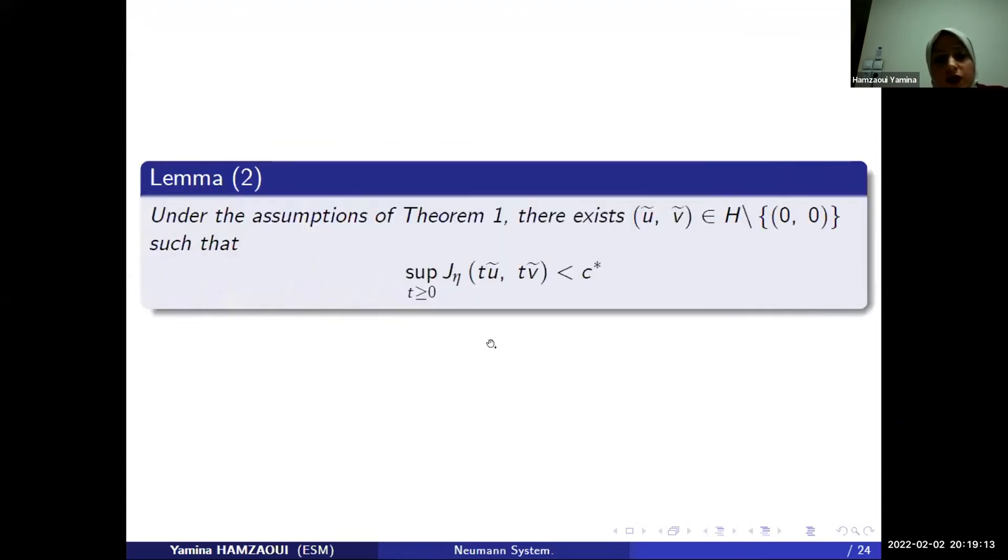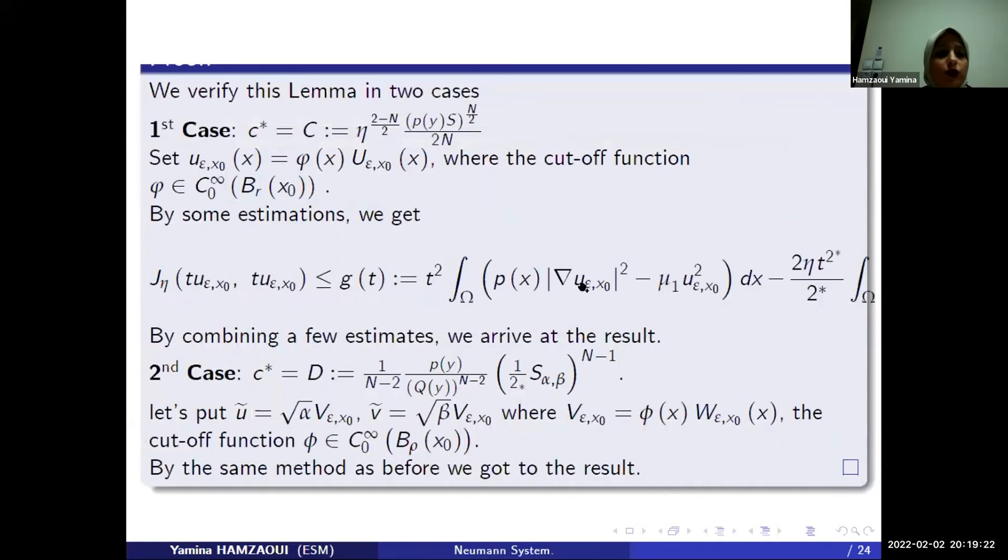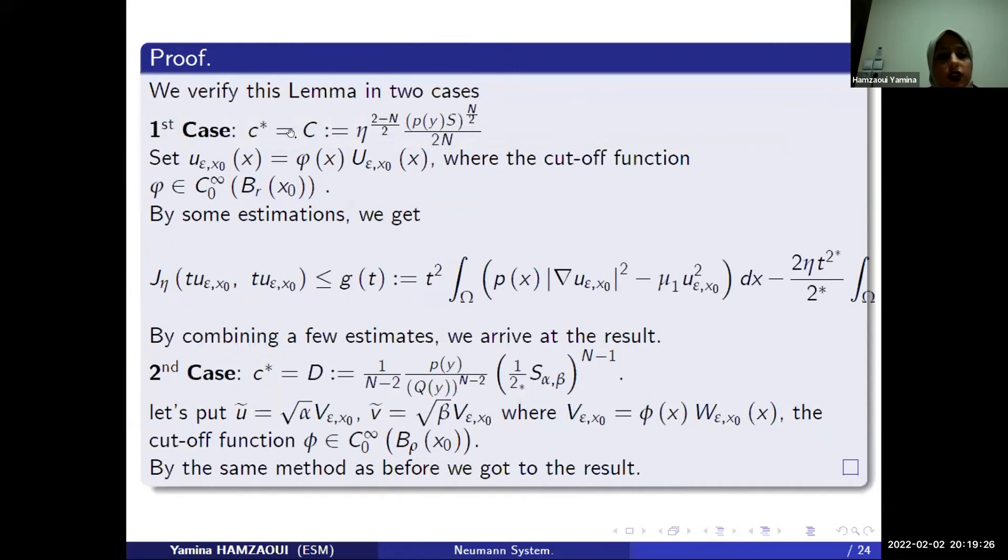Under the assumption of theorem 1, there exists U tilde, V tilde, such that supremum of G eta is inferior strictly at C star. For the proof, we verify this lemma in two cases. The first case, when C star equals C, we use an extremal function, and by some estimation, we arrive at the result.